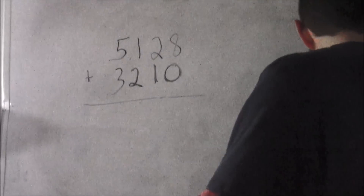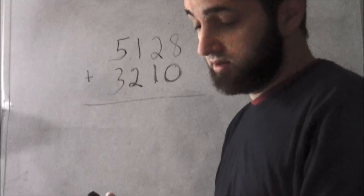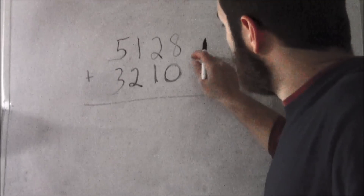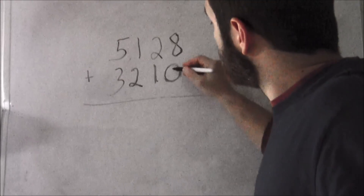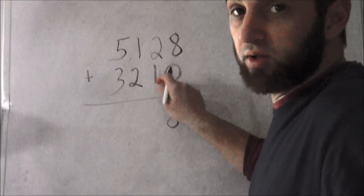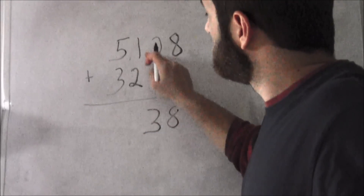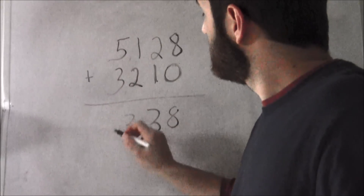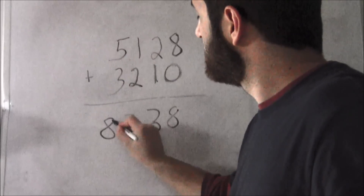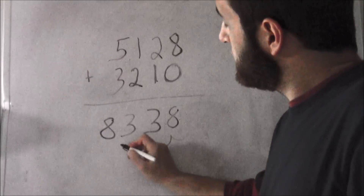Got a marker to work — we got four markers here, let's see if any work. All right, start from the right: eight plus zero is eight, two plus one is three, two plus one is three, and five plus three is eight.